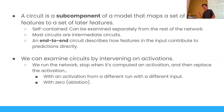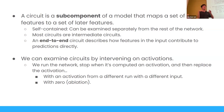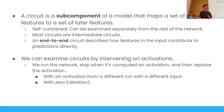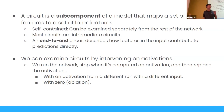Another thing we can do is intervene on activations with an activation from a different run with a different input. Say we run our circuit on one piece of text, compute the circuit, stop in the middle, take that activation, and then run another pass on a different piece of text and patch in the activation from the first run. We can specifically analyze the roles of individual activations inside a circuit by doing this kind of activation patching.